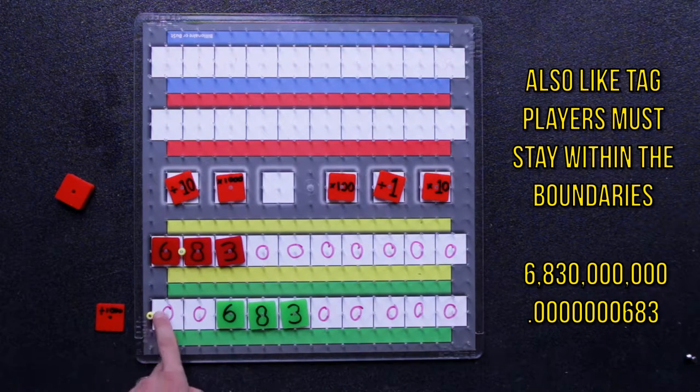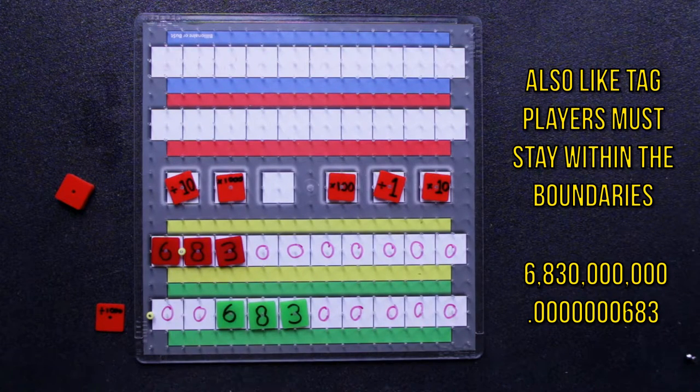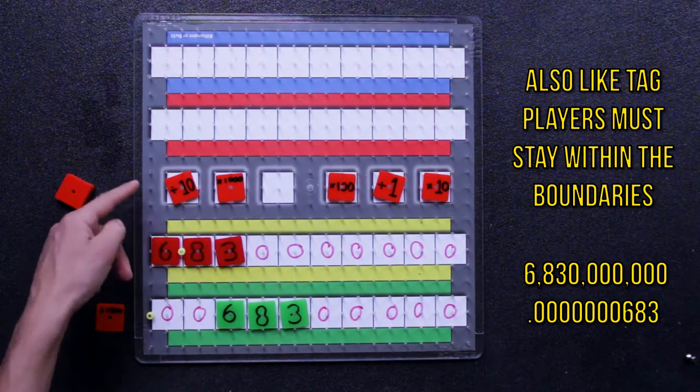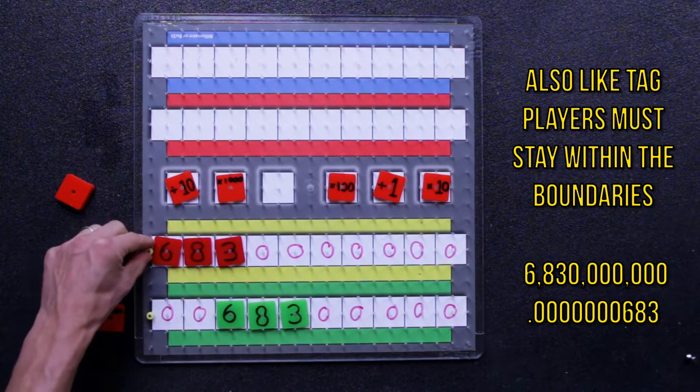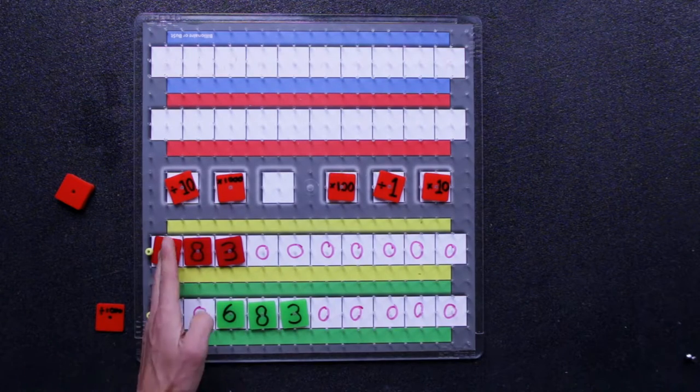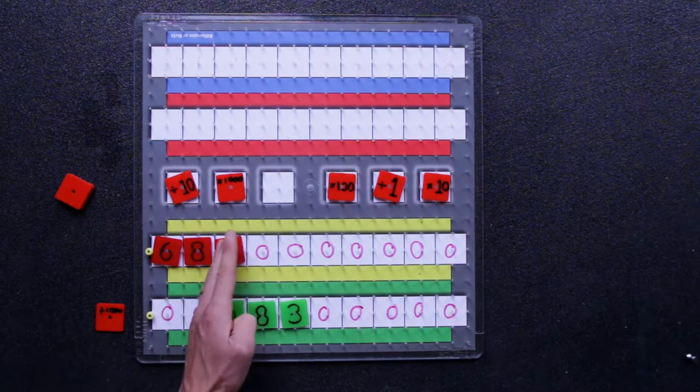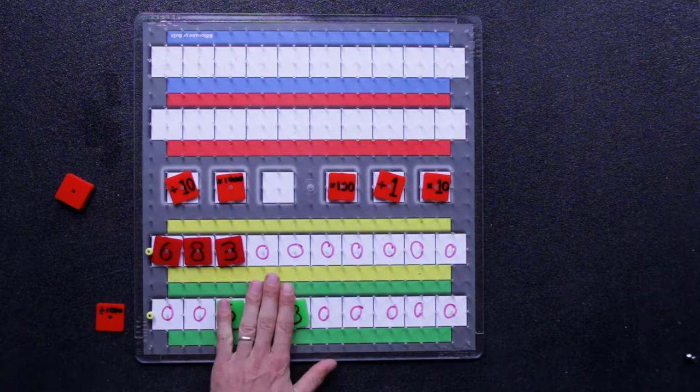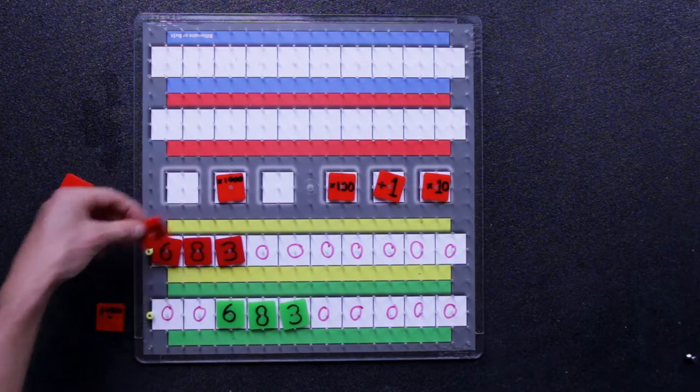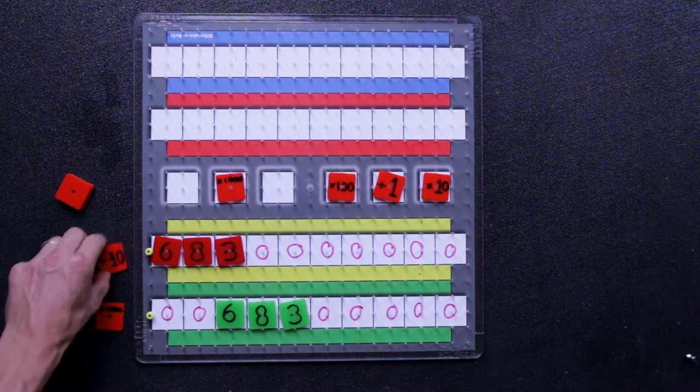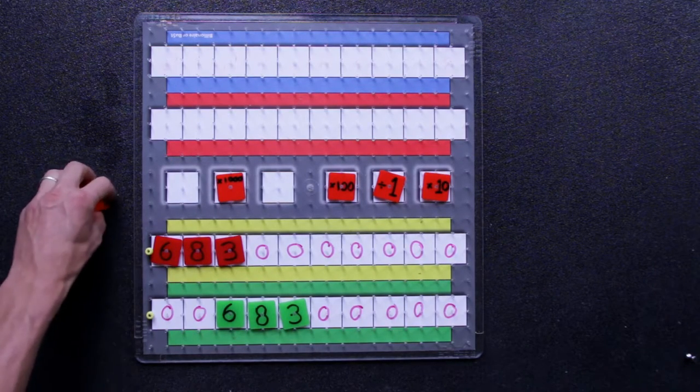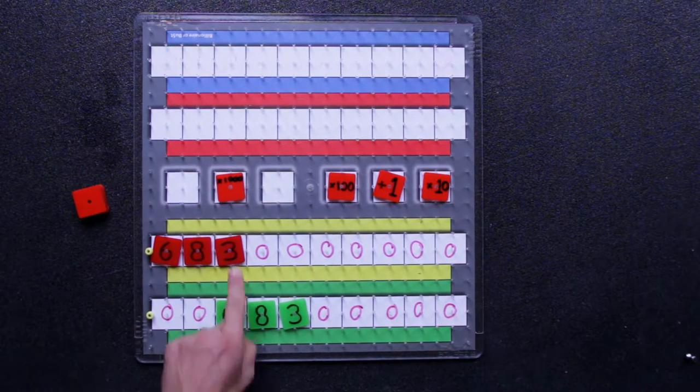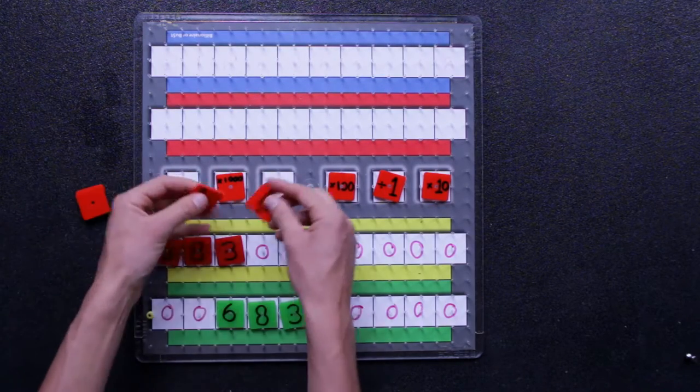Now this player is on 0.00683. The closest or best red team can do is divide by ten, which is just moving their decimal place back to there. They'd need to divide by another hundred to get to the same space as this player. They took the divide by ten action, and now these actions get turned face down and put at the bottom of the pack. Two more actions are drawn.